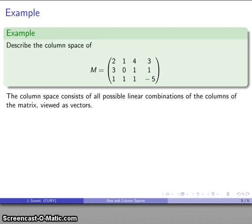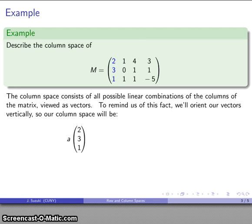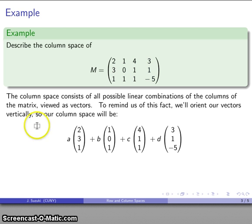So linear combinations, I'm going to take each vector and multiply it by some scalar. And I'll add those together. And there's my column space. So here, my set of all possible linear combinations of those four columns.